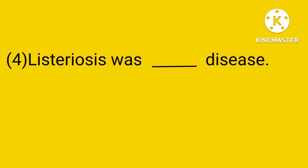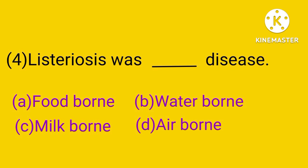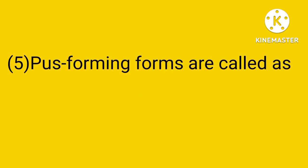Question number 4. Listeriosis is a disease transmitted by: food, water, milk, or air. The answer is A. Listeriosis is a foodborne disease and it occurs after eating contaminated food.